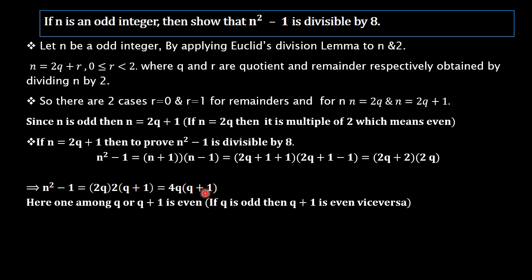We need to prove that either q or q+1 is even. Clearly, we can prove that among q and q+1 — which are two consecutive integers — one of them must be even. For example, if q=1, q+1=2; if q=2, q+1=3; if q=3, q+1=4. Among any two consecutive integers, one is always even.